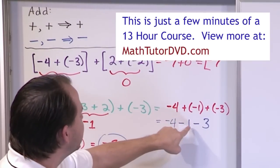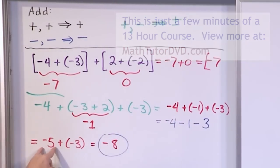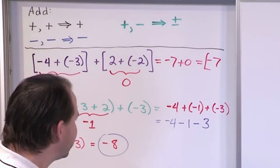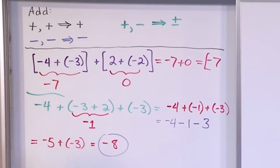You start at negative 4 and you subtract 1. You're going to get to negative 5. That's what we got here. Negative 5 and you subtract 3 more. You're going to go left more. And that's going to give you negative 8.